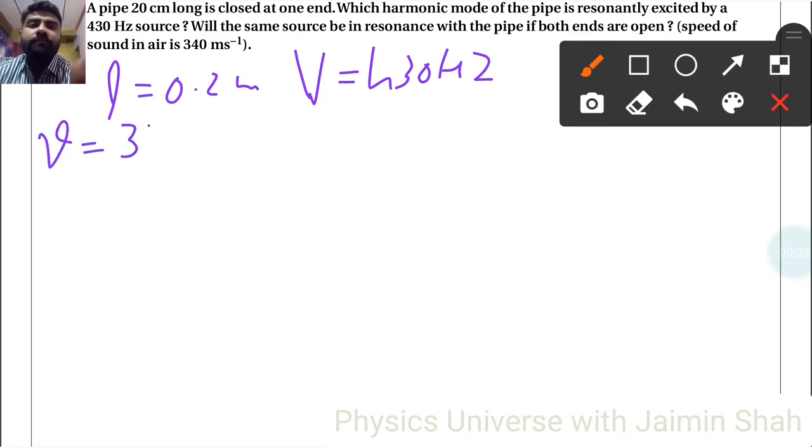A pipe 20 centimeters long, so L equals 0.2 meters, is closed at one end. Which harmonic mode of the pipe is resonantly excited by a frequency nu equals 430 hertz source? Will the same source be in resonance with the pipe if both ends are open? Speed of sound V is given as 340 meters per second. Okay, so first of all, the frequency formula.